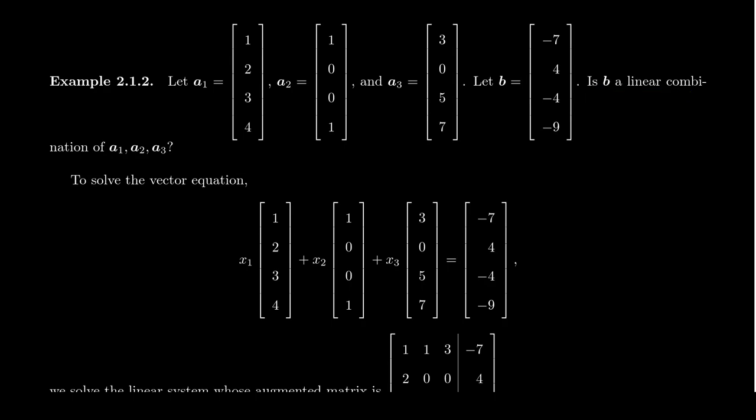So, case in point, let's consider three vectors. a1, which is 1, 2, 3, 4, one of my favorite vectors. a2, 1, 0, 0, 1, and a3, which is 3, 0, 5, 7.